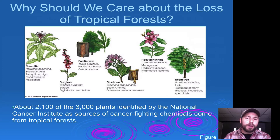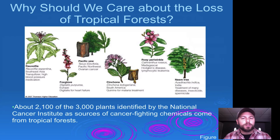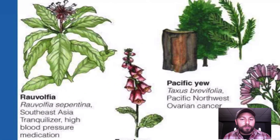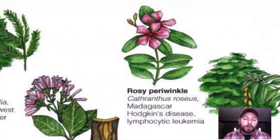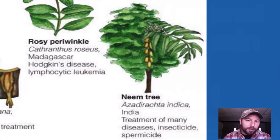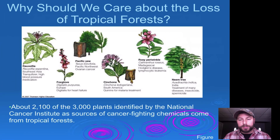Why should we care? Besides the ecological services that tropical rainforests provide, there are a number of chemicals and compounds that come from plants within these forest areas. By protecting them, we may be holding on to some cures or cancer-fighting chemicals from these areas. At least half of the world's terrestrial plant and animal species live in tropical rainforests — these highly biodiverse areas whose vertical structure supports enormous productivity.